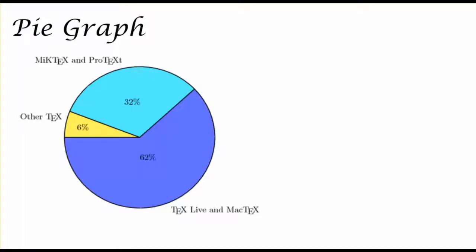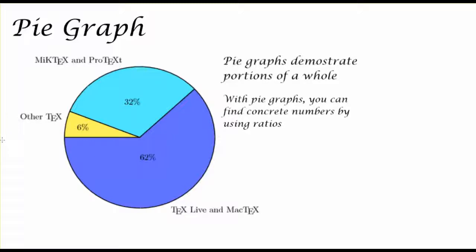Moving on to the pie graph, we are able to take information and interpret it and examine it as part of a whole. Pie graphs demonstrate portions of a whole. So imagine this whole circle is 100% and we have what each of our categories, the other text or the text live in this case, what each of those categories represents. This category represents 6%, another represents 32%. And with these pie graphs, you can find concrete numbers by using ratios.